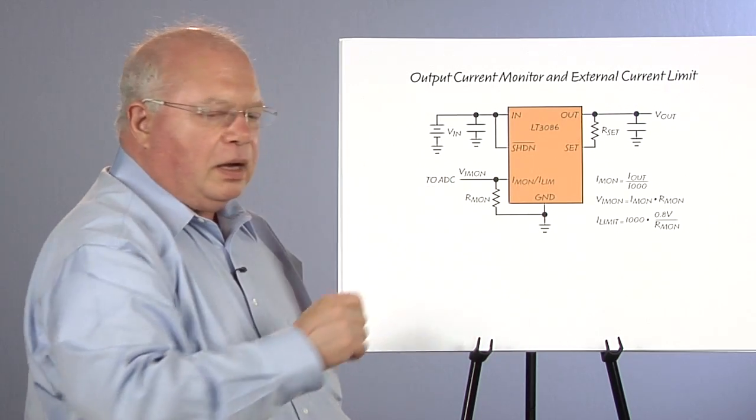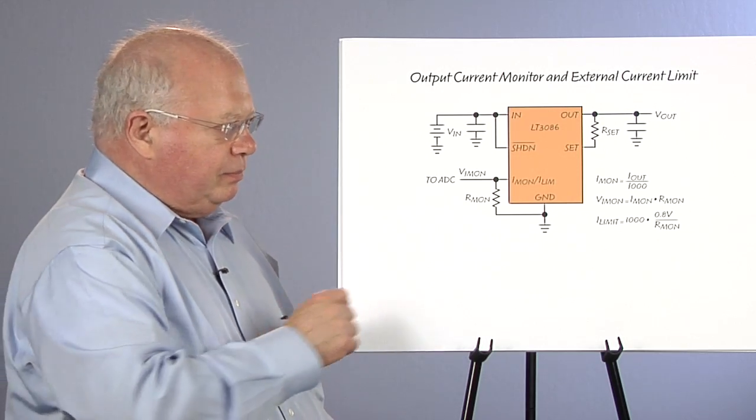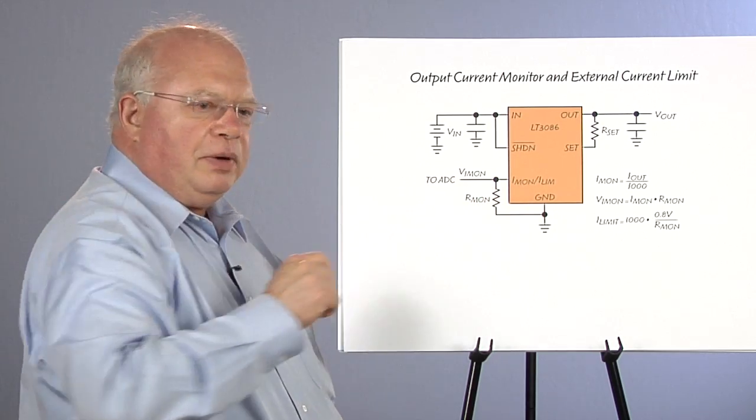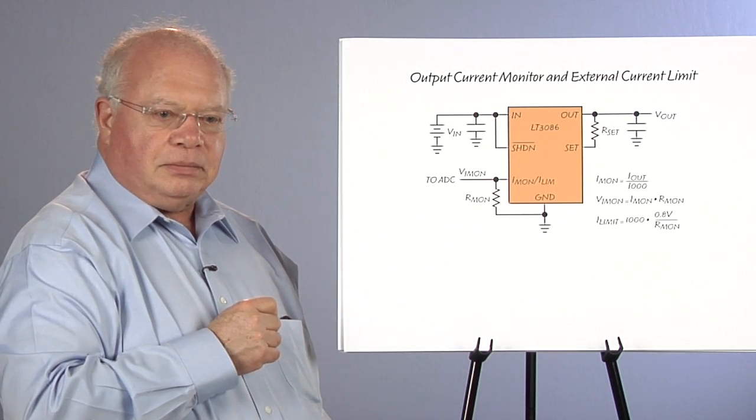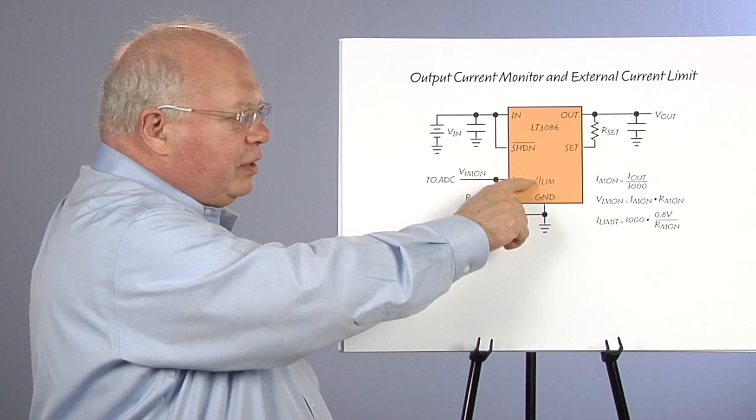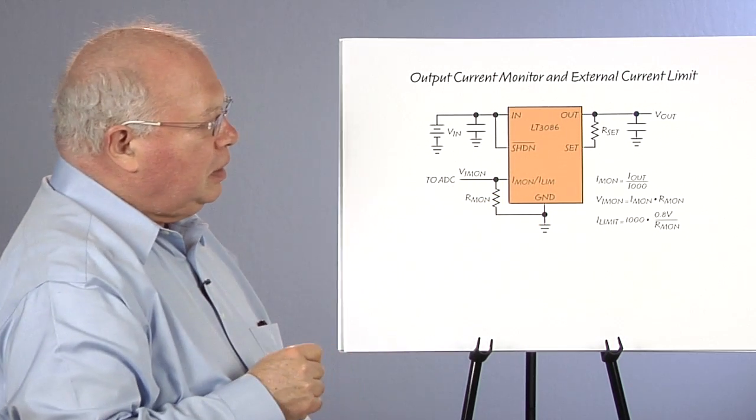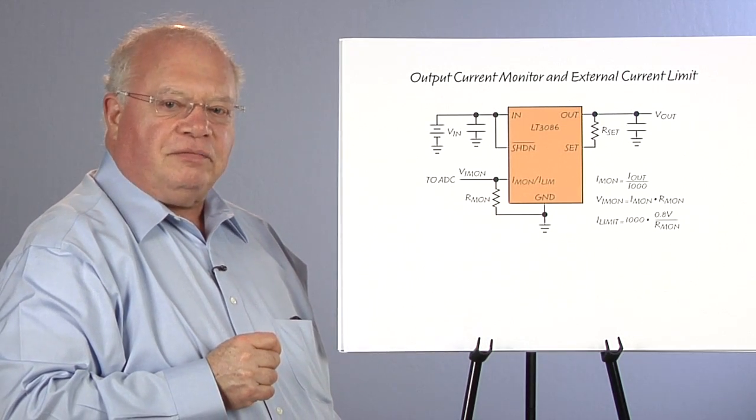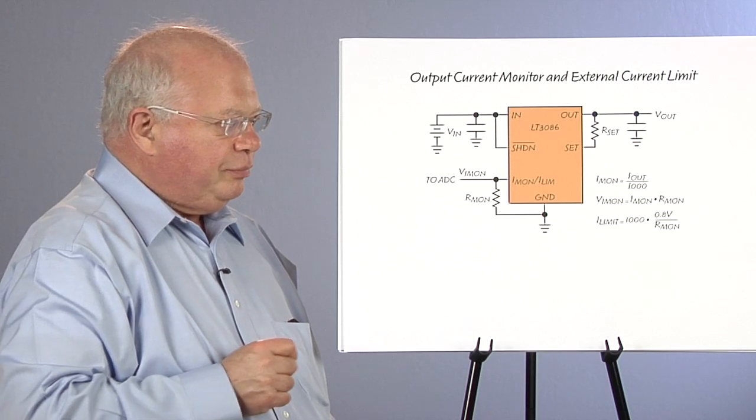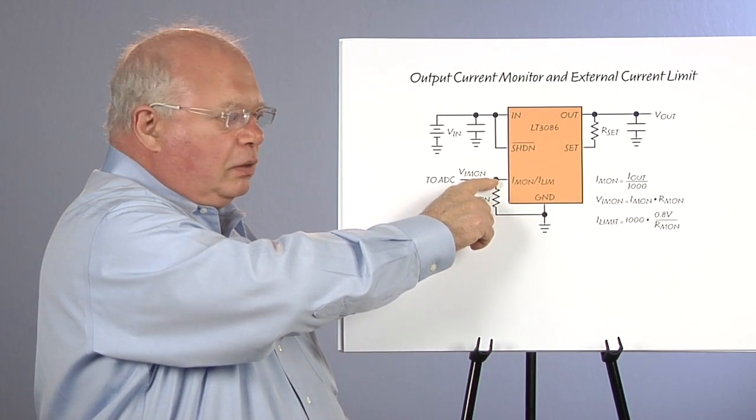We have a current monitor output, which will also control the current limit. When this pin reaches 0.8 volts, the device goes into current limit. So we have a current proportional to the output flowing through resistor to ground. Our current through the monitor resistor is I out divided by a thousand. When the voltage at this point reaches 0.8, we current limit.